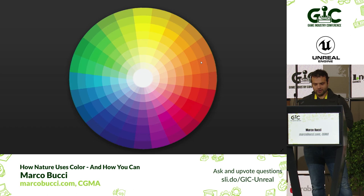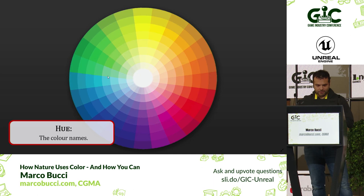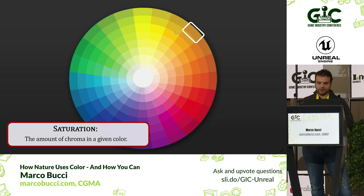The color wheel will be your friend after this hour is over. The outside ring contains all the colors we can see: yellow, orange, red, blue, purple. These are called hues — the color names. Next up is saturation. The outside of the color wheel is perfectly saturated.